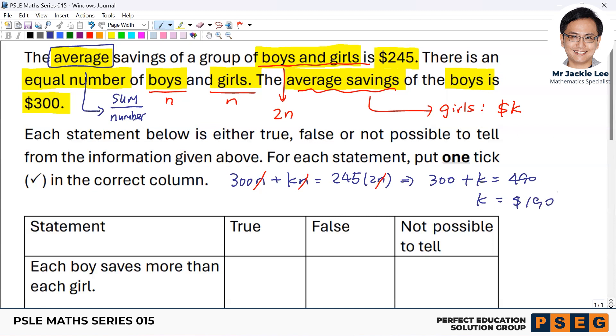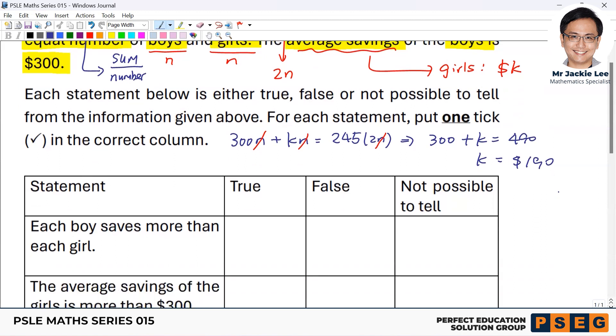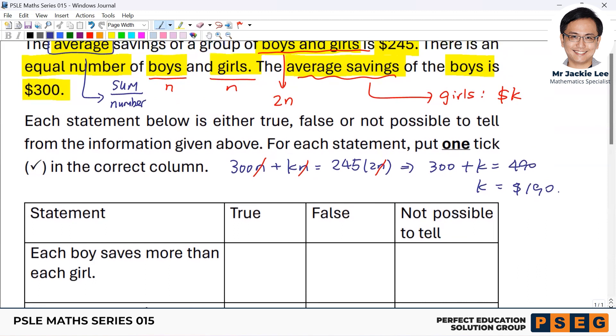Okay. Now we come down to check the statement. Each boy saves more than each girl. Now you will base on the average savings seems like yes, because the boys is 300. For the girls, we have calculated it's 190. But please think very carefully.